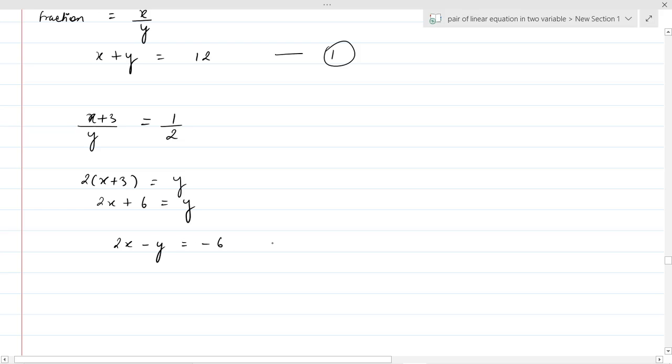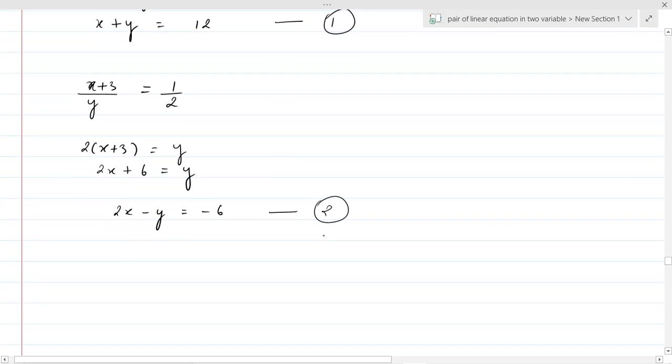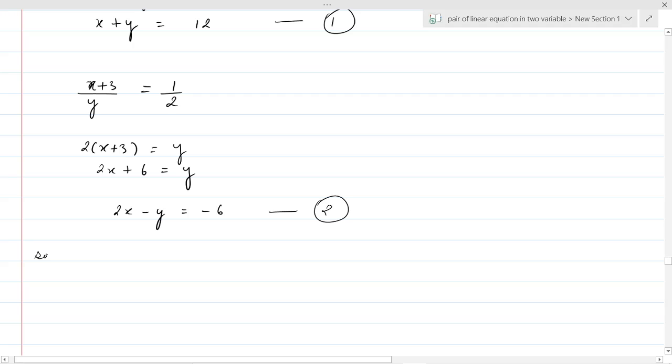Cross multiply: 2 times x plus 3 equals y, 2x plus 6 equals y, 2x minus y equals minus 6, equation second. So we have two equations now we have to solve.